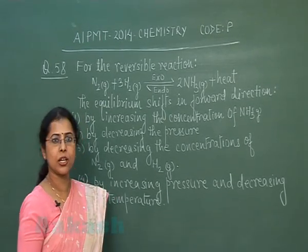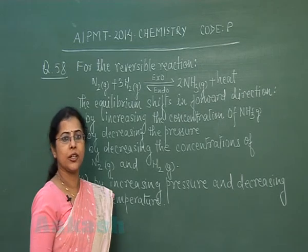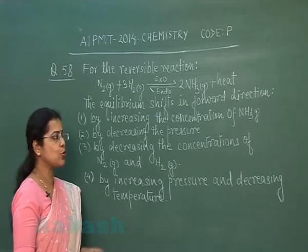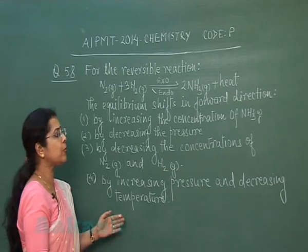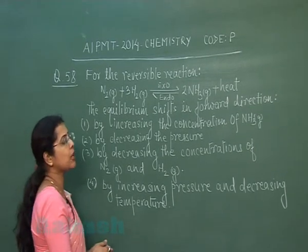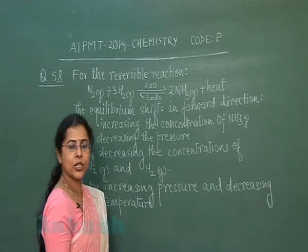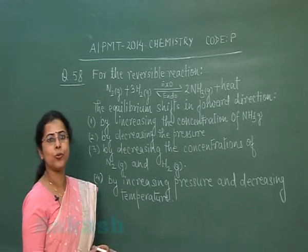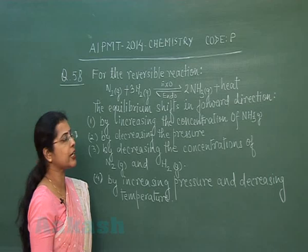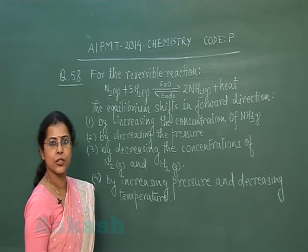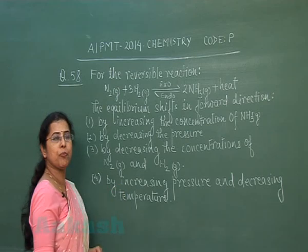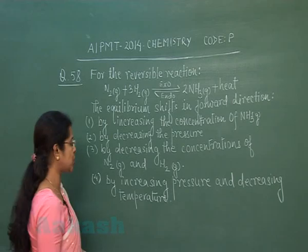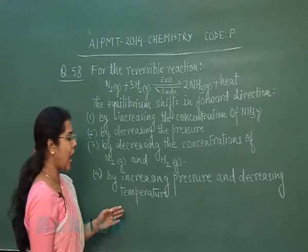According to Le Chatelier's principle, exothermic reactions are favored by low temperature. So the first thing: temperature should be low. The other parameter is pressure. According to Le Chatelier's principle, an increase in pressure decreases the volume, so equilibrium shifts in the direction where the number of moles decreases. This means the appropriate condition for shifting the equilibrium in the forward direction should be high pressure and low temperature.